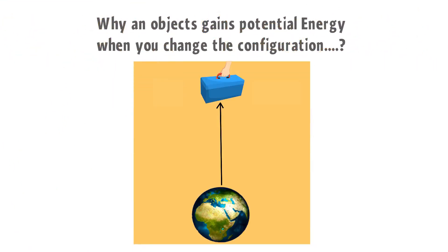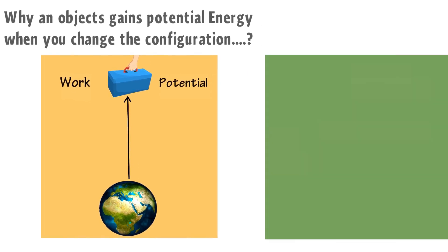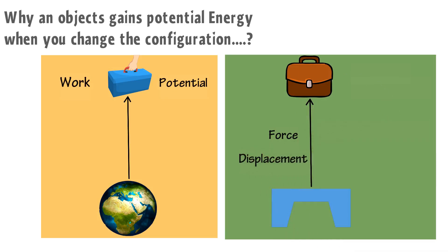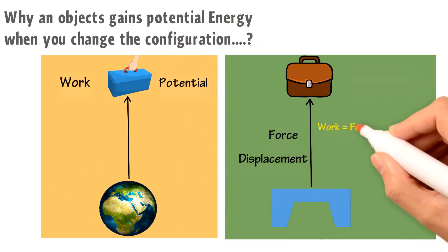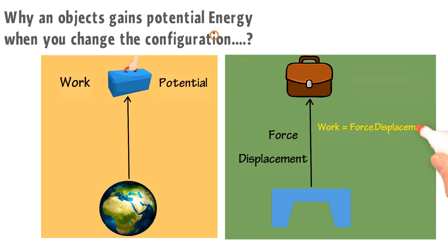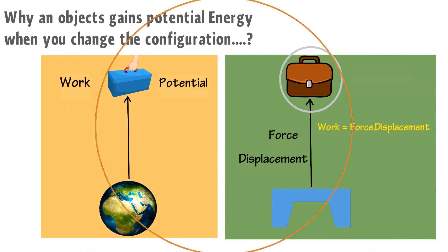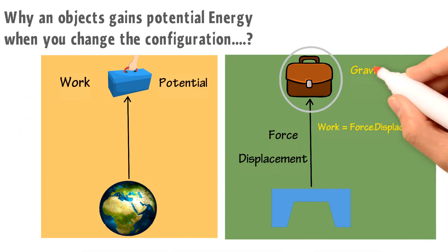Why does an object gain potential energy when you change its position or configuration? Well, it is due to the work we do on objects. As a result, this work stores within the objects and they then have the potential to do work. For example, when you lift an object above the table, you exert force and the object covers a displacement in the direction of your force. Work done is equal to F dot displacement, meaning you have done work while lifting the object, and this work stores potential energy in the object.